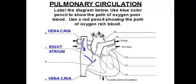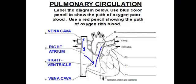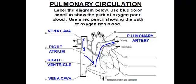The right atrium will then contract and send this oxygen-poor blood to the right ventricle. The right ventricle will then contract, sending this oxygen-poor blood through a major vessel called the pulmonary artery, which brings blood away from the heart. In the pulmonary artery, the blood is delivered to the lungs, where it picks up oxygen, and then returns as oxygen-rich blood through structures called the pulmonary veins.